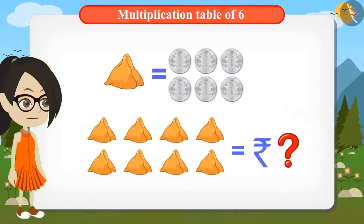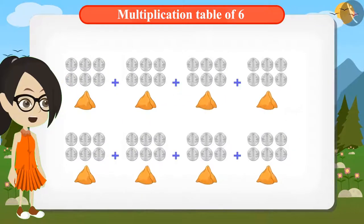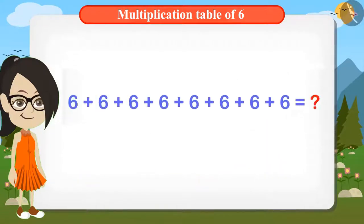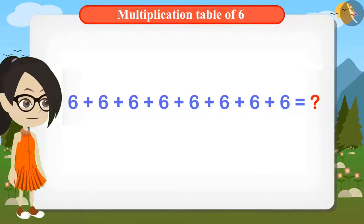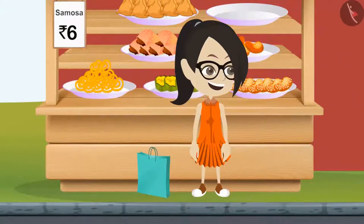One samosa costs six rupees. To find the cost of eight samosas, let me add six rupees eight times. Vandana is adding six rupees eight times. Do you know of a better method? Multiplying six by eight is better than adding six repeatedly eight times.